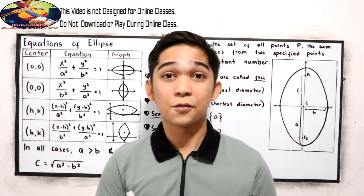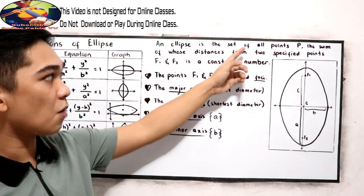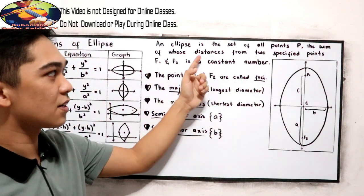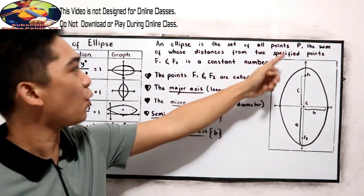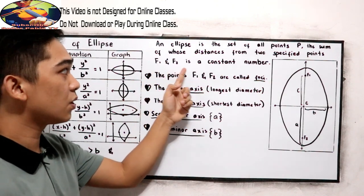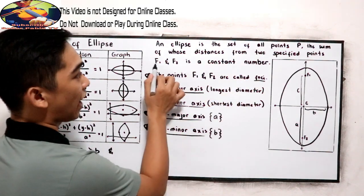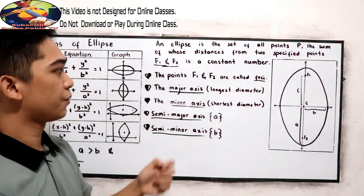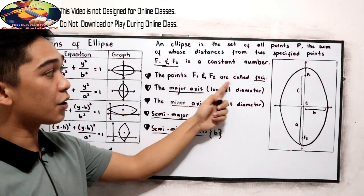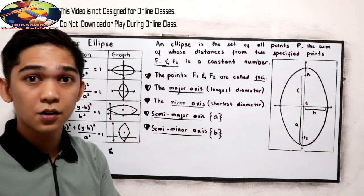First, let us define. An ellipse is the set of all points P, the sum of whose distances from the specified points F1 and F2 is a constant number. The points F1 and F2 are called foci. Its singular is focus.